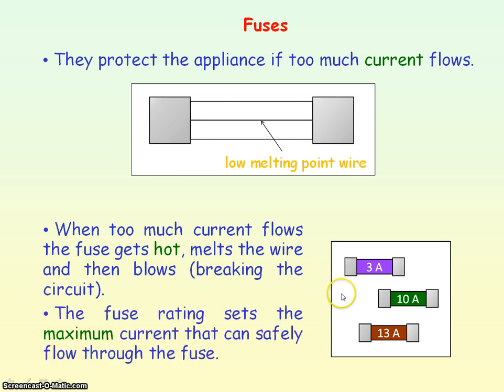Fuses have different ratings. The rating sets the maximum current that can safely flow through the fuse. For example, a 3 amp fuse has a maximum current of 3 amps. Above 3 amps, the fuse will melt and blow.